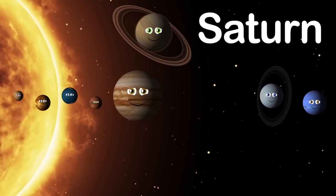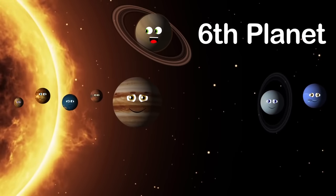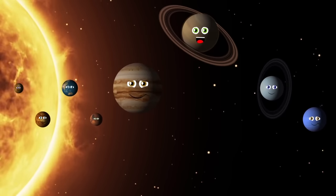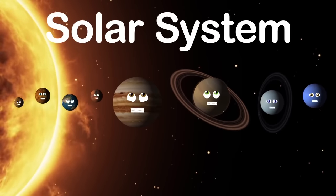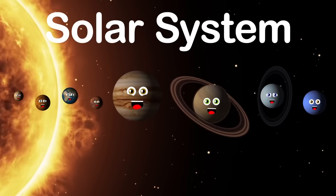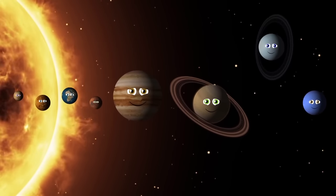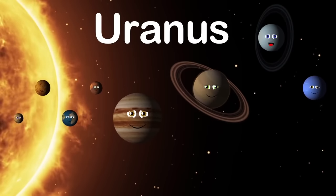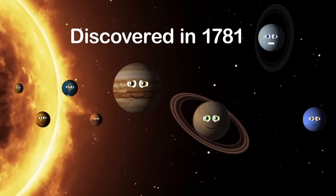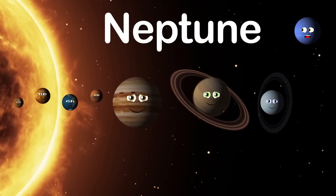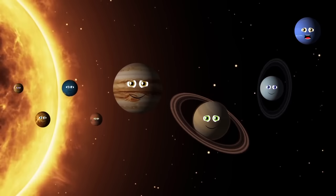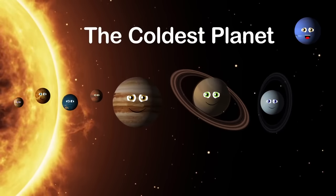My name is Saturn — I am brown in color and the sixth planet from the sun. My outer rings are extremely thin, made of dust and icy chunks. My name is Uranus — I am blue in color, the seventh planet from the sun. I orbit the sun once in 84 Earth years and was discovered in 1781. My name is Neptune — I'm also blue in color, the eighth planet from the sun, the last gas giant, and the coldest one.